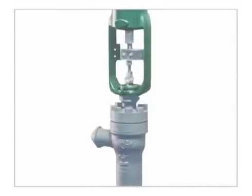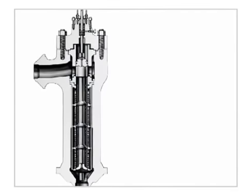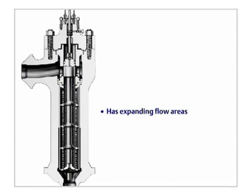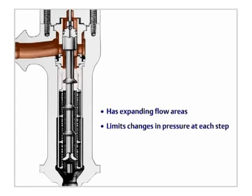In addition, the Cavitrol IV valve trim has expanding flow areas that decrease pressure as the fluid flows through. Limits changes in pressure at each step to prevent fluid from reaching the vaporization point. And prevents leakage.